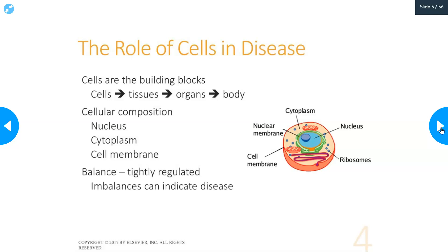Let's talk about the role of cells in disease. Cells are the building blocks of our entire body — cells are assembled into tissues, and tissues into organs, which are assembled into organ systems that make up the body. Everything in the body happens at the cellular level; cells are responsible for all metabolism and all reactions. A cell is usually composed of a nucleus, a cytoplasm, and a cell membrane with organelles such as mitochondria, ribosomes, Golgi apparatus, or endoplasmic reticulum. There are some cells, like red cells, that don't have a nucleus, but generally cells have all these components.